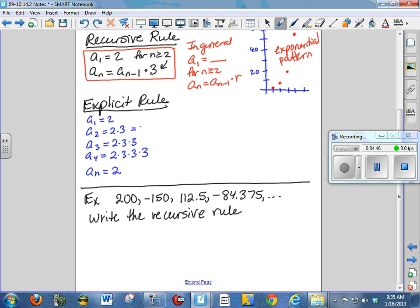So I can say this is 2 times 3 to the first. A sub 3 is 2 times 3 squared. A sub 4 is 2 times 3 to the third. I could say a sub 1 is 2 times 3 to the 0. So in general, a sub n is 2 times 3 to the n minus 1. So we have an exponential function, which is what we expected.